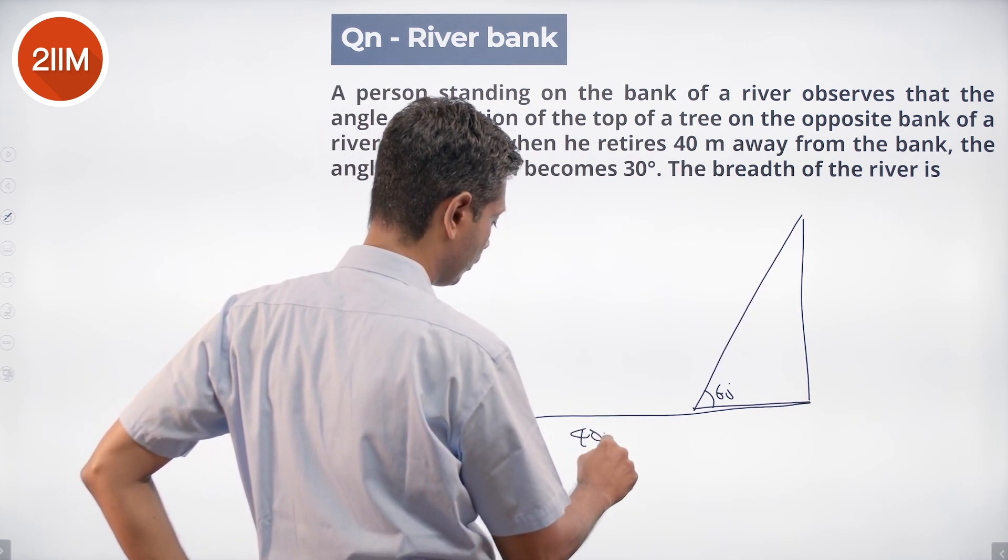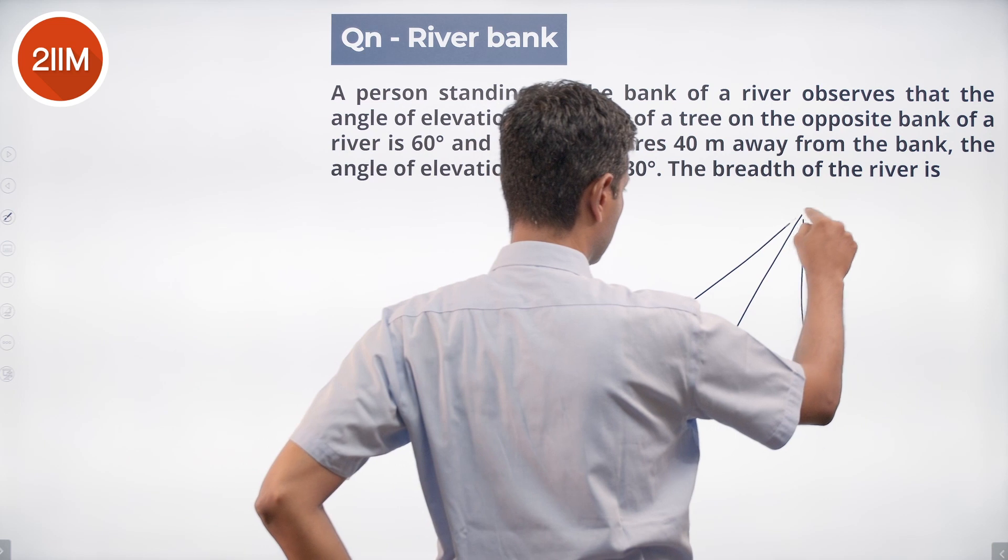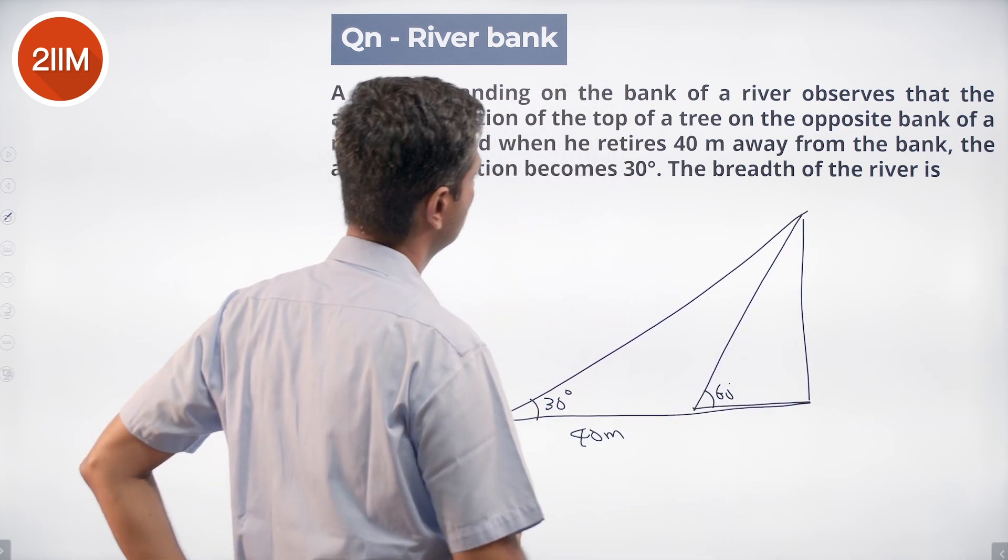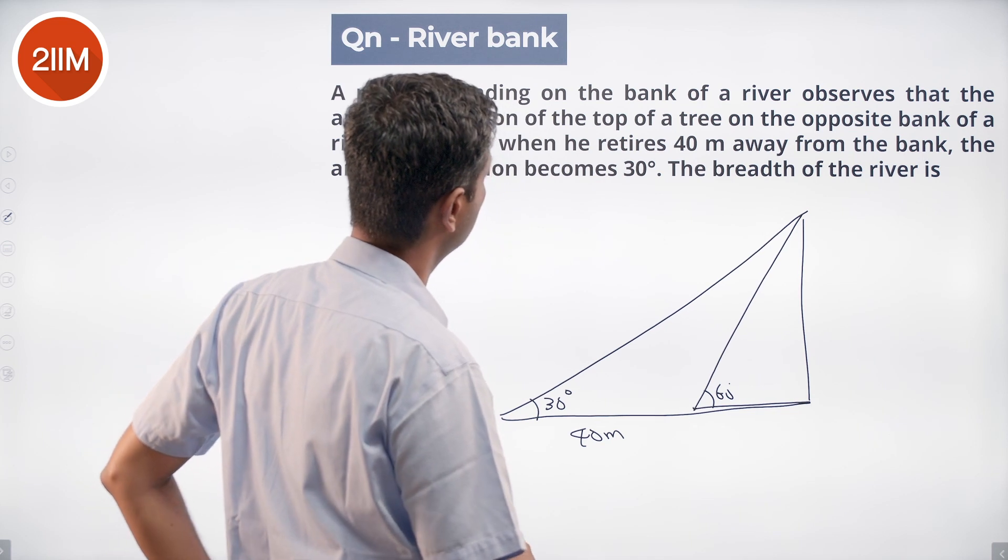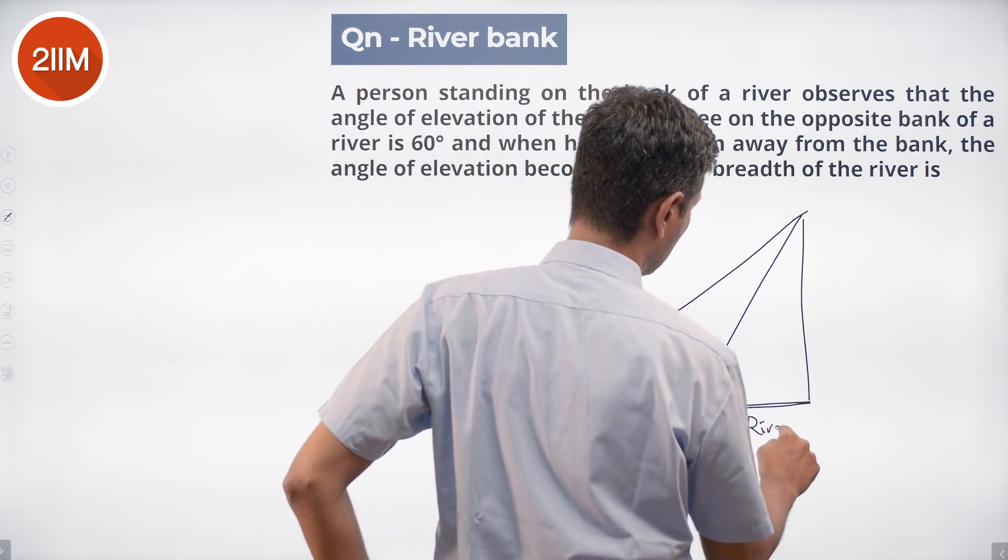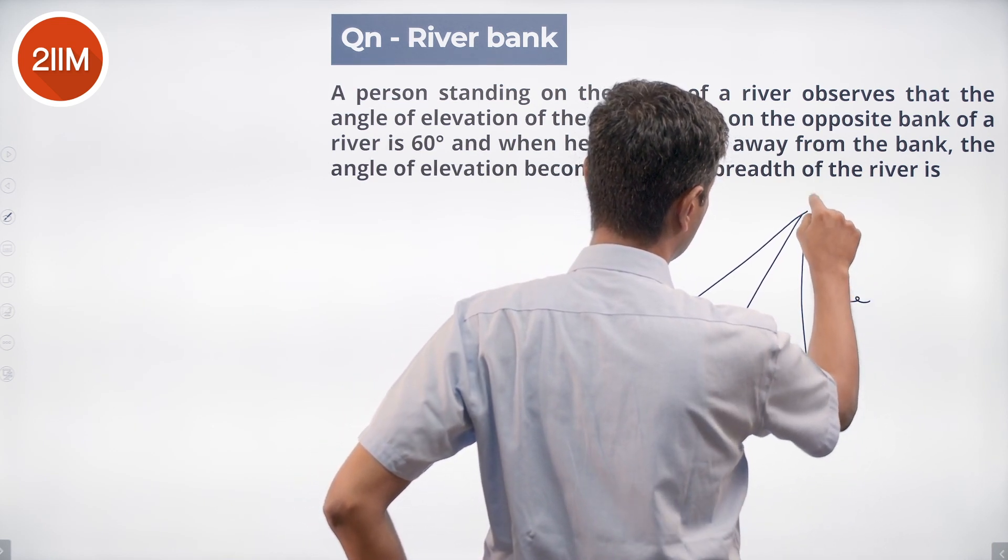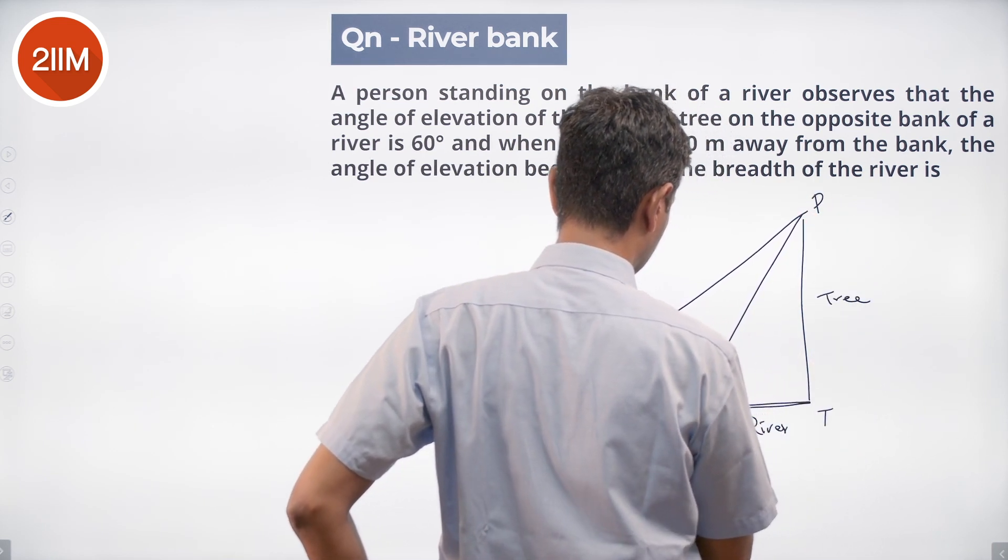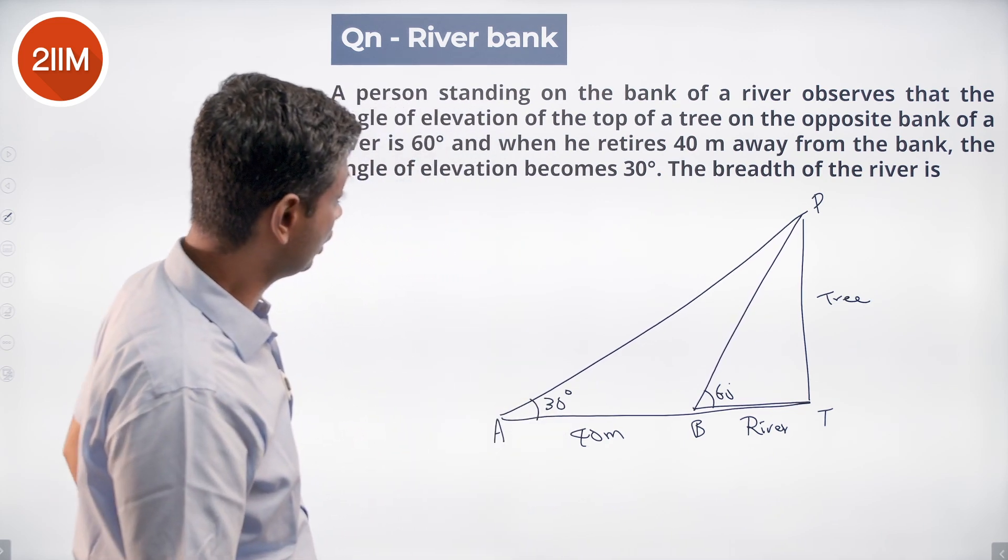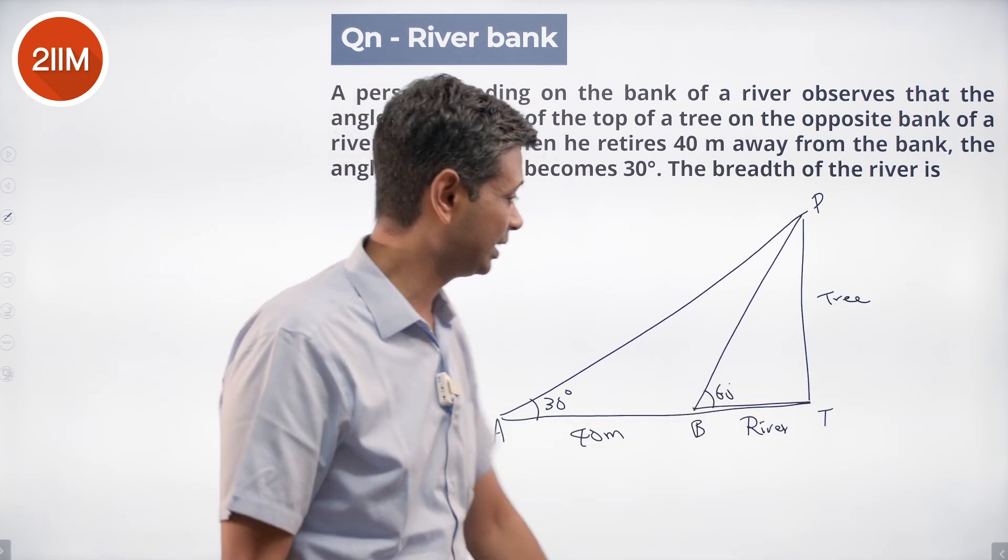This distance is 40 meters, this is the river, this is a tree. Say this is P, T, B, A. We want to find the breadth of the river, this PT, the height of the tree is H.